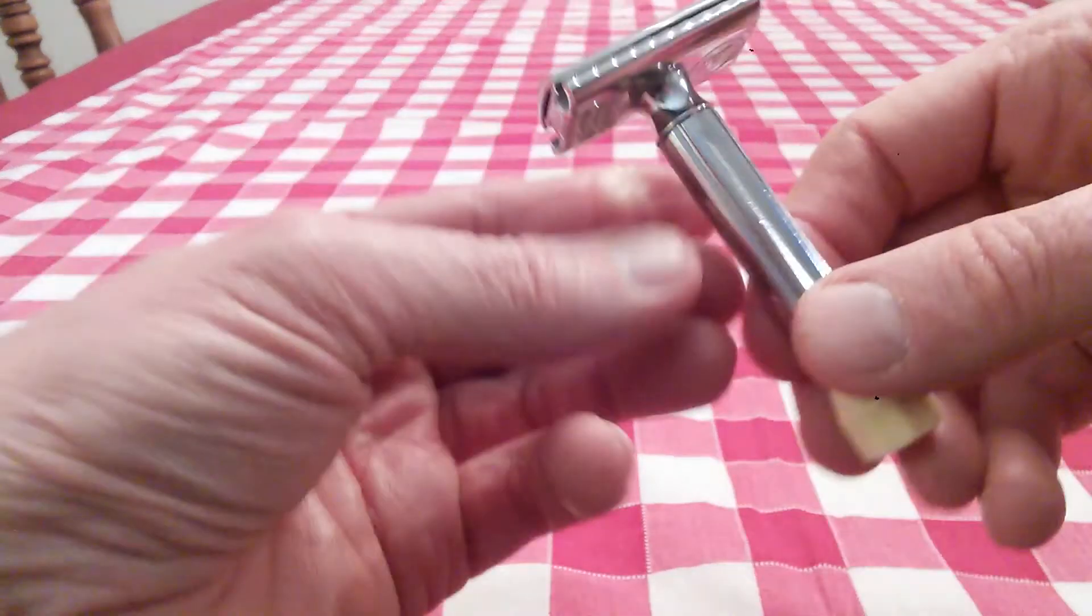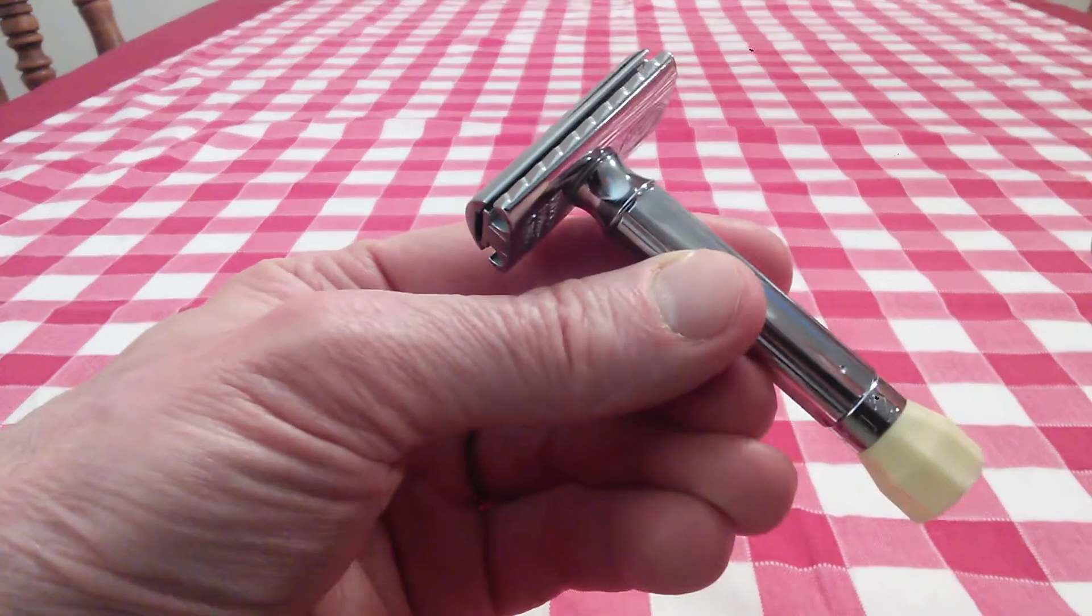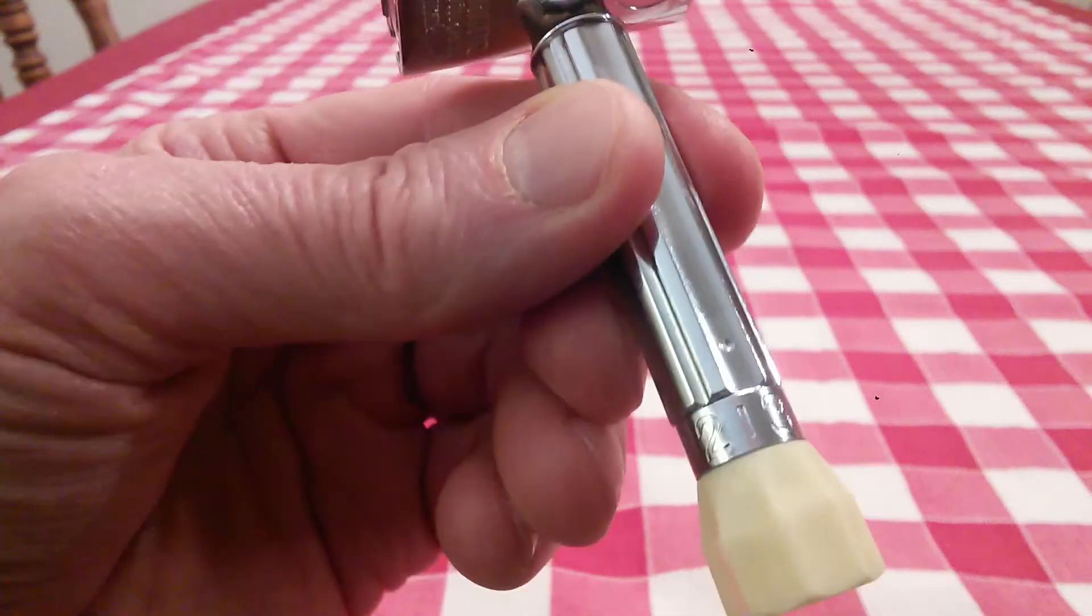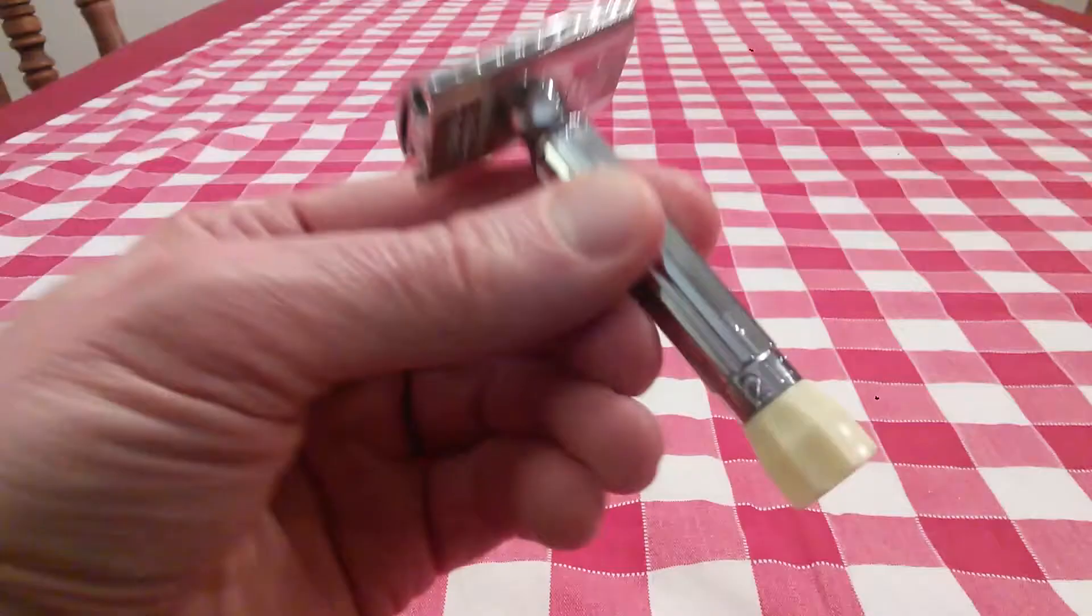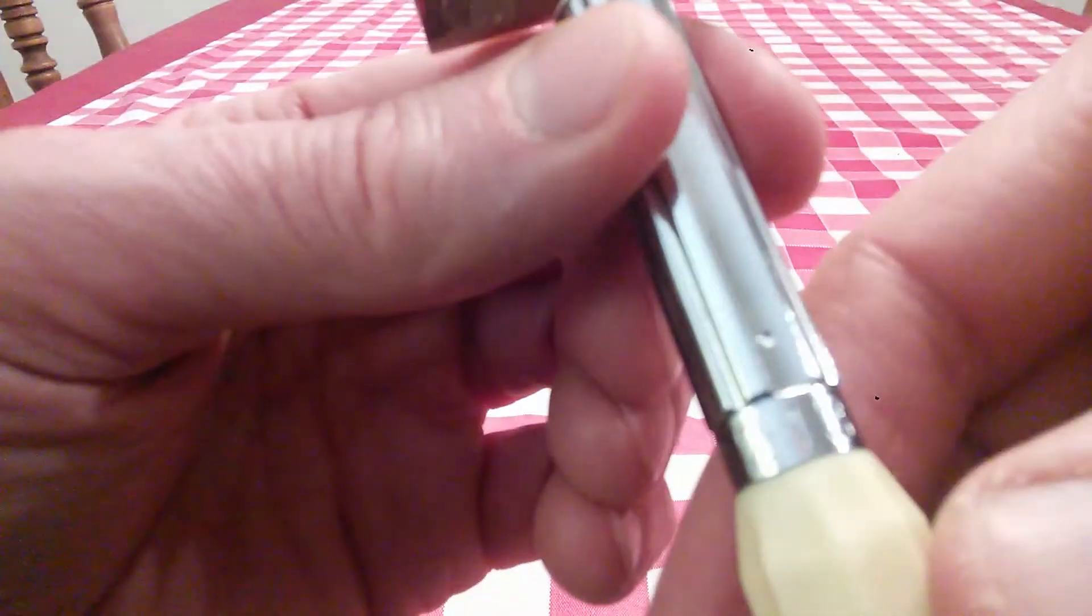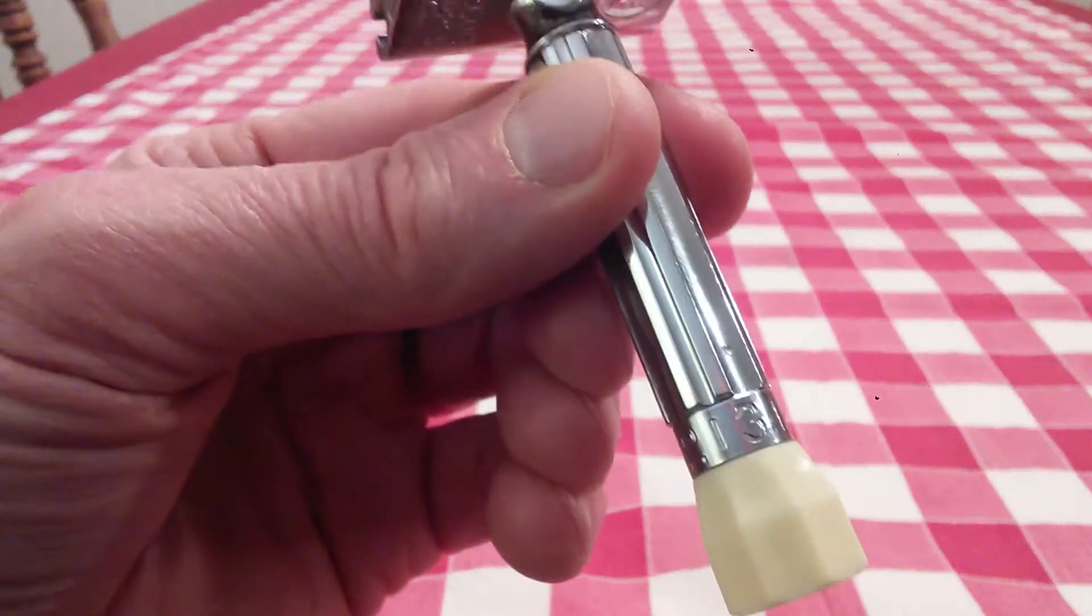And with number two I'll do a complete shaving pass. And then I'll re-lather and then turn this up a notch to two and a half and do another shaving pass. And then I'll go ahead and re-lather and turn it up to number three and finish my shave.